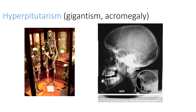In hyperpituitarism, gigantism or acromegaly, you can see in this picture that the size of the skeleton itself is very large. The pituitary sella turcica region also appears very large.